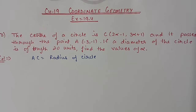Hello students, we are doing chapter number 19, coordinate geometry, exercise 19.4. Till question number 12 we have already done. Now we are starting from question number 13. The center of a circle is C(2α−1, 3α+1) and it passes through the point A(−3, −1).